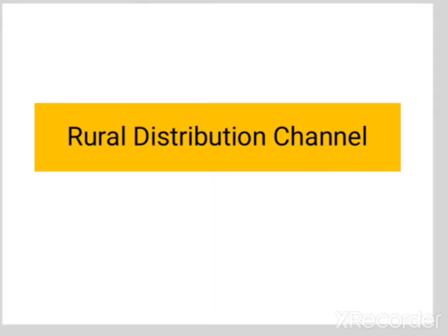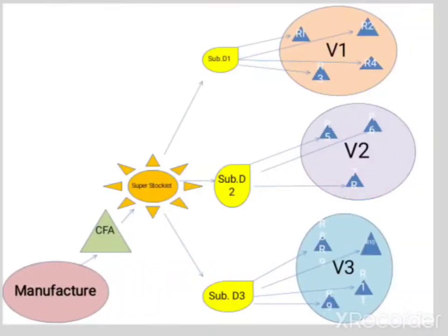We have discussed about the hub and spoke distribution model which is most commonly adopted by rural marketers to reach out to rural consumers. It starts with a manufacturer, then the produce is carried forward to the carrying and forward agency (CFA). From the carrying and forward agency, the produce is transported to the super stockists, where all kinds of commodities from different companies are stocked together.